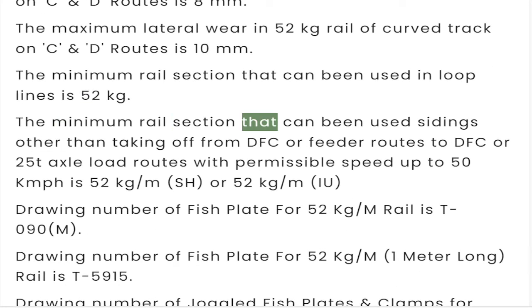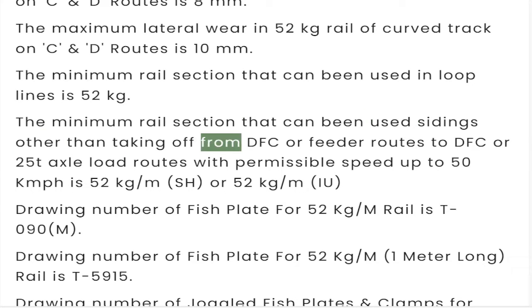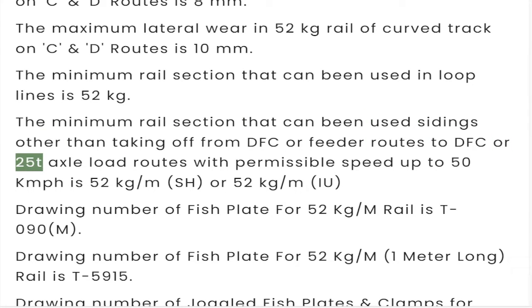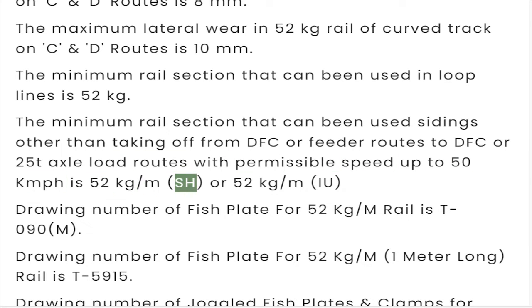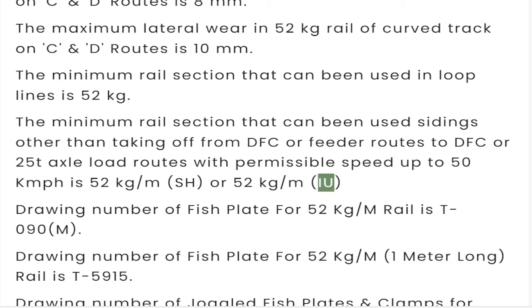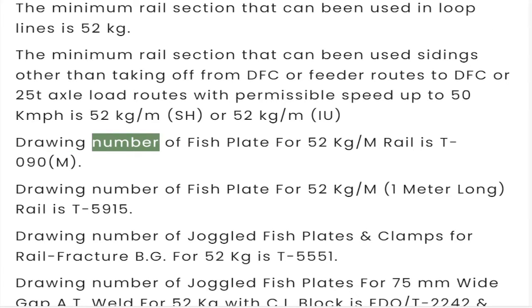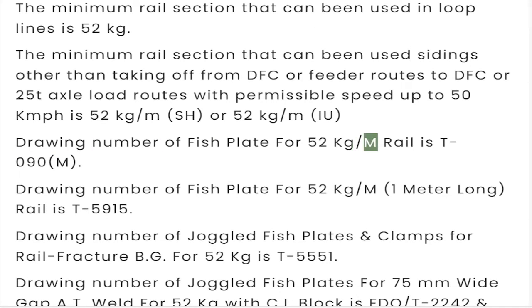The minimum rail section that can be used in sidings other than those taking off from DFC or feeder route to DFC, or 25-tonne axle load routes with permissible speed up to 50 kmph, is 52 kg SH or 52 kg IU. Drawing number of fish plate for 52 kg rail is T090M.